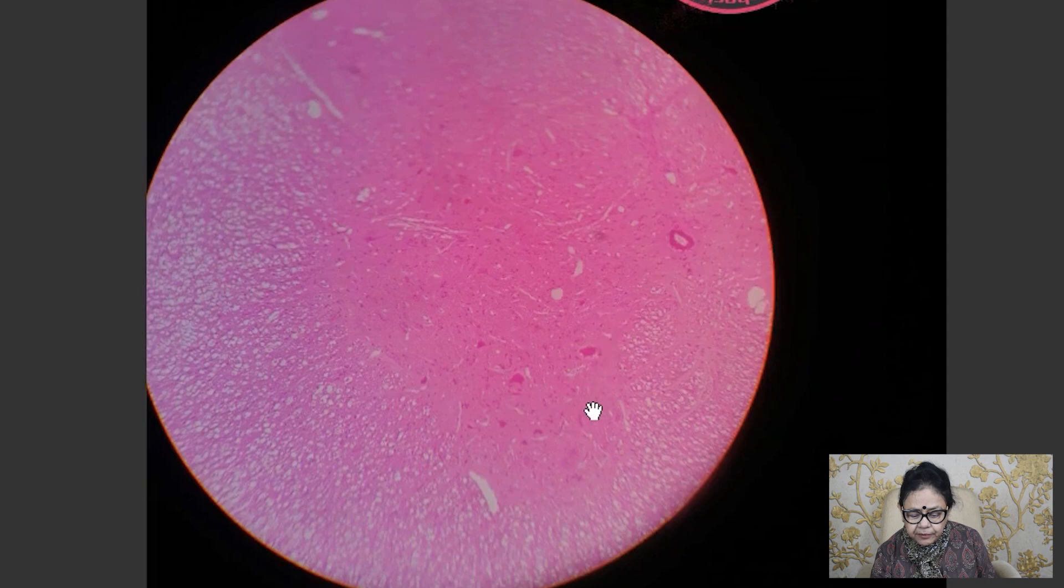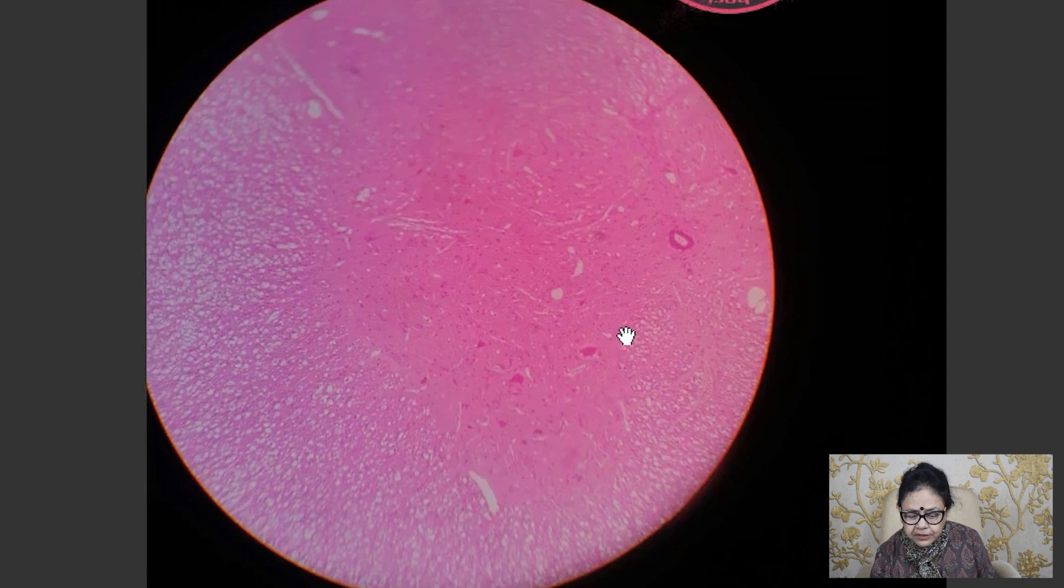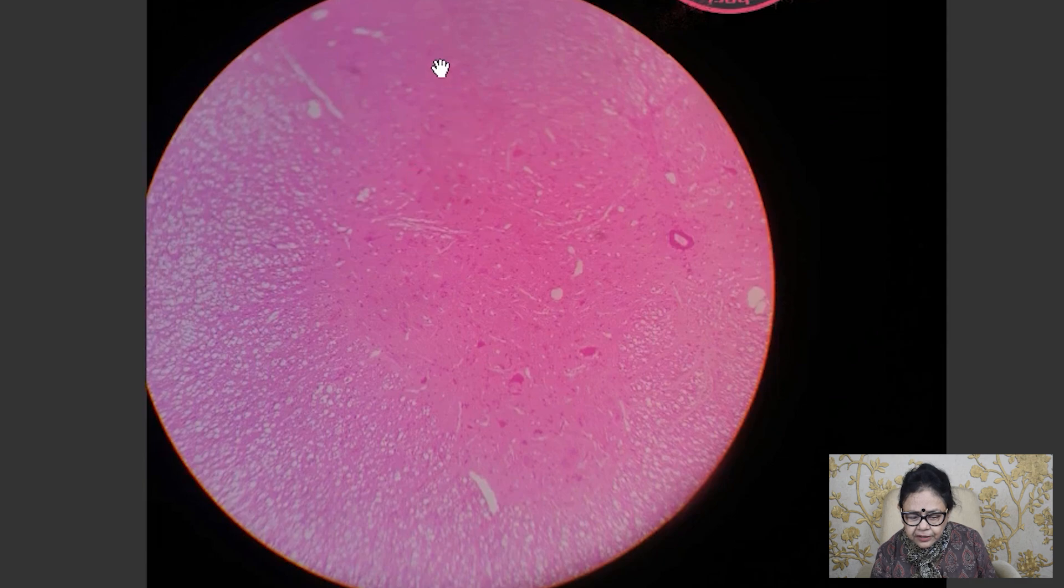Now, this is the grey matter and you will see the anterior horn of the spinal cord is bulbous. So, this whole thing you will see this is the anterior horn and this is the posterior horn.